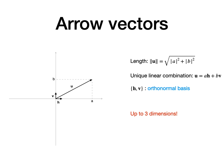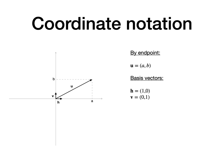A limitation of arrow vectors is that humans can't really imagine them beyond three dimensions. We can represent position vectors also by their endpoint coordinates.